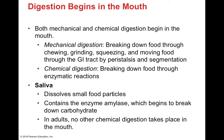There are two types of digestion: mechanical and chemical. Mechanical digestion is anything that moves or mixes food — chewing, grinding, squeezing — without involving enzymatic reactions. Enzymatic reactions fall under chemical digestion. Both types of digestion start in the mouth.